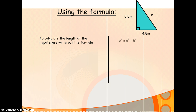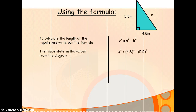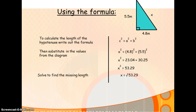Let's try again with another question — you can try this yourself if you want to press pause. Start with the formula: the hypotenuse squared is equal to the sum of the squares of the other two sides. Applying the information gives us x squared is equal to 4.8 squared plus 5.5 squared. Working that out on a calculator, x squared is 53.29. Don't stop there — take the square root to find x, which gives 7.3 metres. Give your answer to one decimal place unless the question asks for something else, and remember to include your units.